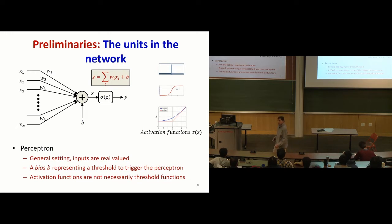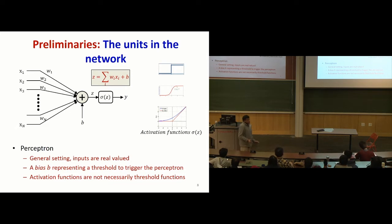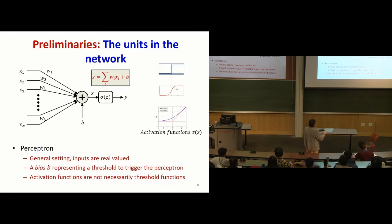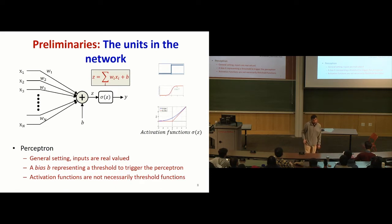If the affine combination of inputs was positive, the output was one; otherwise zero. But you could also use other activations once you model the unit in this manner — like a sigmoid, a hinge function, the smooth version of the hinge function, or other such functions.